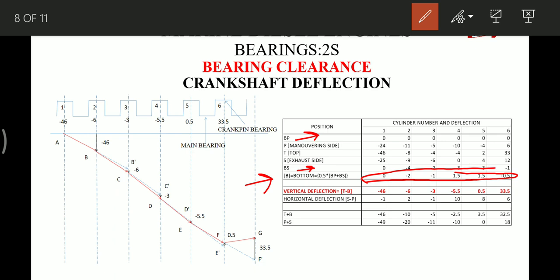After that we need to take the vertical deflection and the horizontal deflection. So to calculate the values for vertical deflection, we have to subtract the value of readings in the bottom position from the value in the top position - that is T minus B, which gives 46 for first unit, 6 for second unit, minus 3 for third unit, minus 5.5 for fourth and so on. Similarly, horizontal deflection we subtract port readings from starboard readings. So this gives horizontal deflection readings.